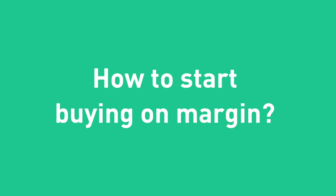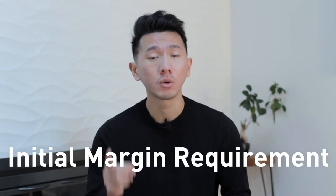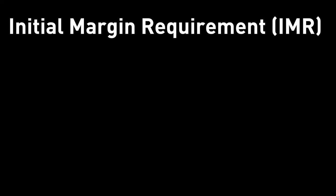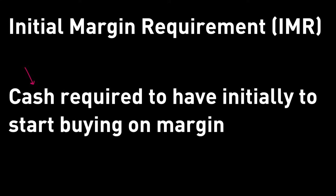Number two: how do you get started with margin? There's no free lunch. You cannot just walk up to the brokerage firm and say, 'I want to borrow 1 million from you and start to buy some Tesla stocks.' First, you have to fill out some forms of paperwork regarding your income level or investing experience, history, that kind of stuff. Once that is done, you need to have something called initial margin requirement. Since we understand margin means your money, initial margin requirement means how much cash you are required to have in your account initially.